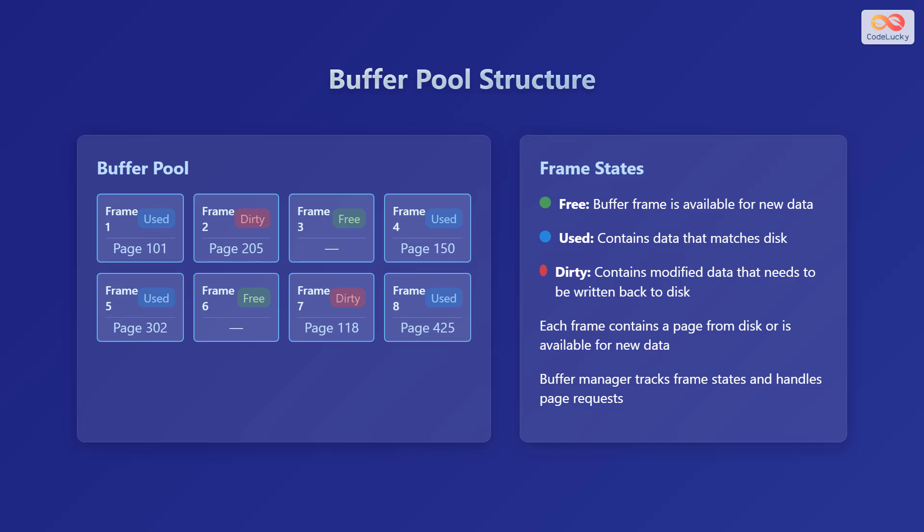A free frame is available and ready to store new data. A used frame contains valid data that matches what's on the disk. A dirty frame holds data that has been modified but not yet written back to the disk. The buffer manager keeps track of which frames are in which state and manages requests to load and access data pages.